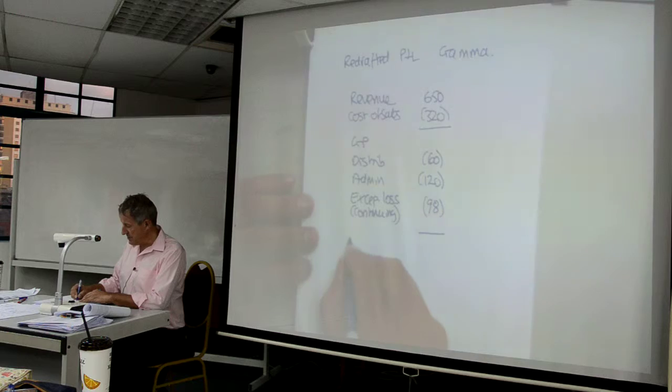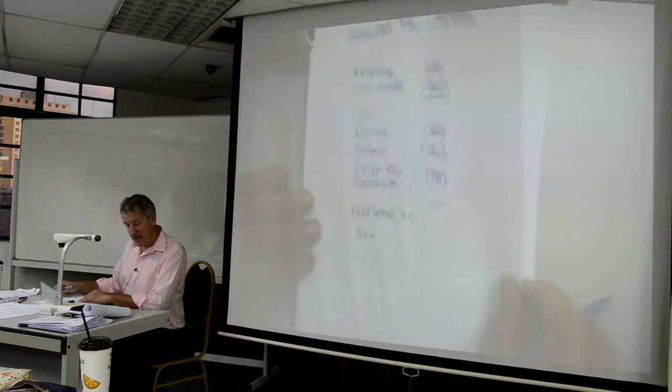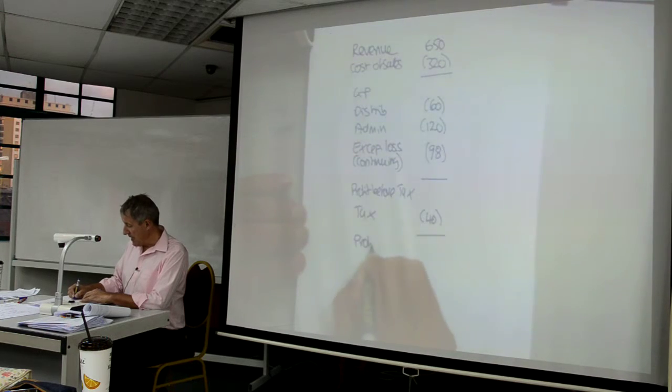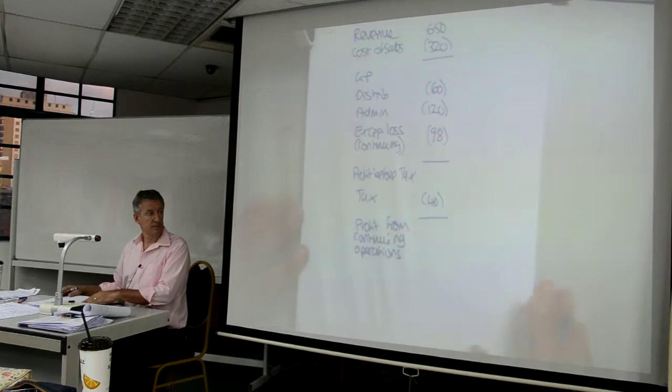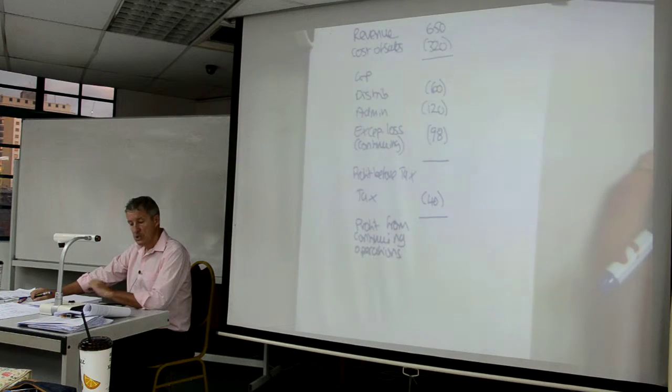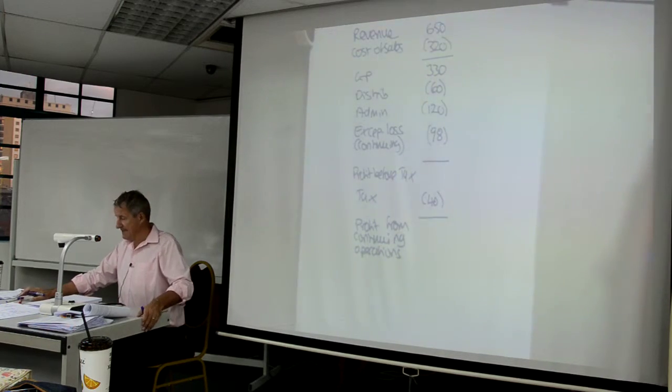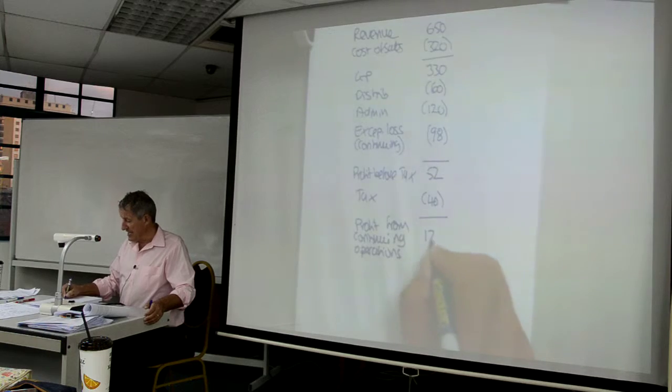This will then give us a profit before tax. I will have my tax as a single line. I have my tax only being that of Alpha. And this is my profit from continuing operations. So let me fill in some of the gaps. Gross profit presumably is $330. What's the profit before tax? $52. And therefore the profit is $12.